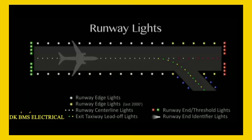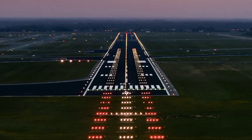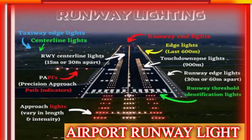There are many types of lights on the runway, as shown on my screen. Today I will give information about these runway lights. Number 1 is taxiway edge light, number 2 is runway centerline light, number 3 is PAPI light, number 4 is approach light, number 5 is runway end light, number 6 is runway edge light, number 7 is touchdown zone light, number 8 is runway edge light, and number 9 is runway threshold identification light.